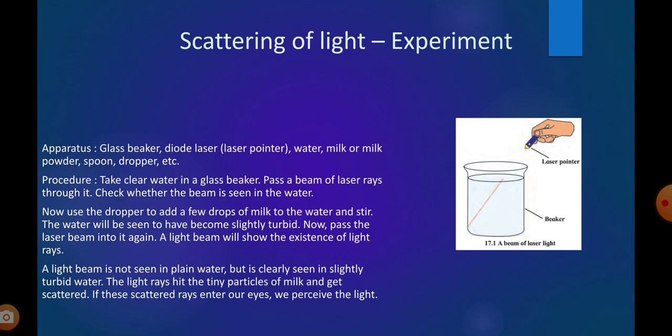A light beam is not seen in plain water but is clearly seen in slightly turbid water. The light rays hit the tiny particles of milk and get scattered. If the scattered rays enter our eyes, we perceive the light. So in slightly turbid water, the laser light travels and you can see clearly the scattering of light.